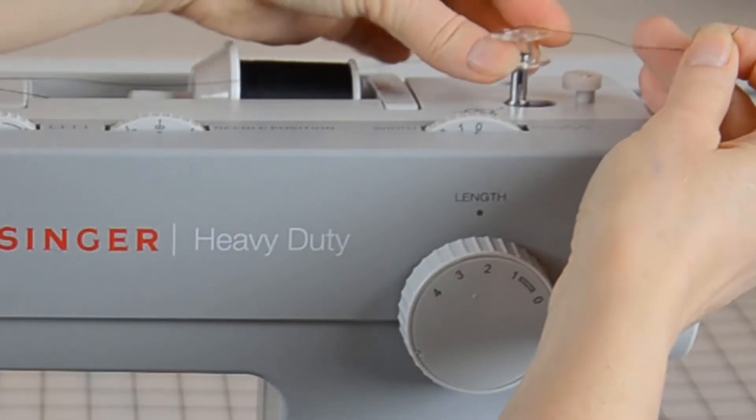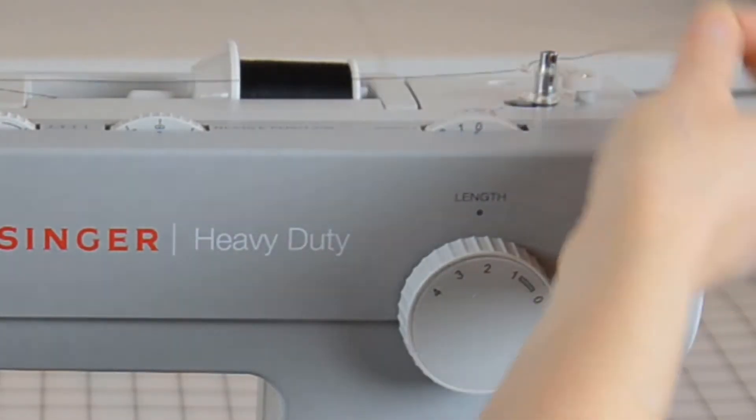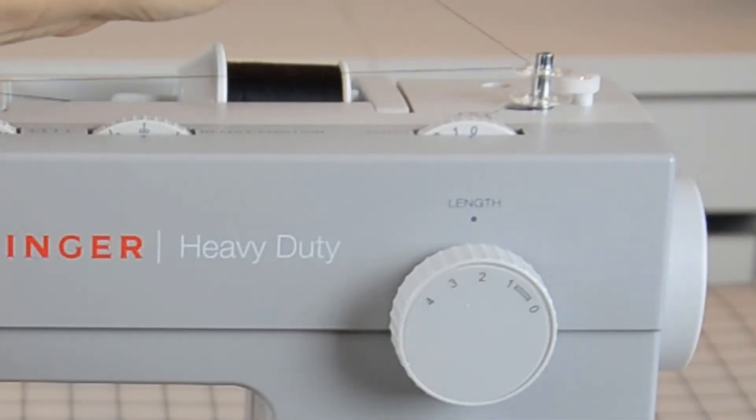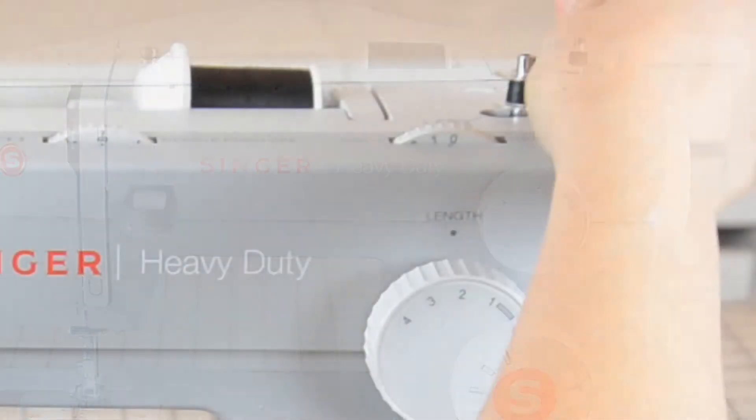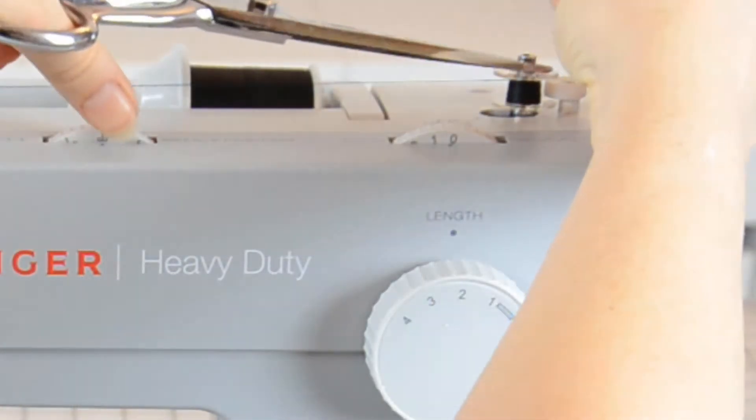Slide the bobbin winder over to activate it and deactivate the needle. Hold the thread firmly. I usually wind the thread around my finger to make sure that it doesn't slip out of my hands. If your thread doesn't break on its own, snip it off once you have the thread started.